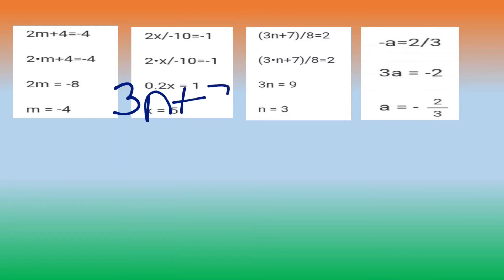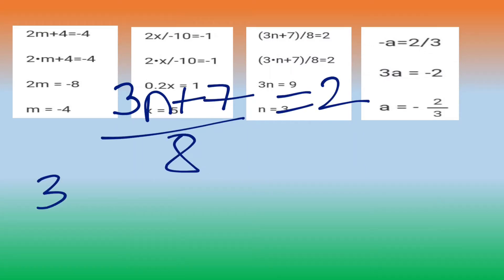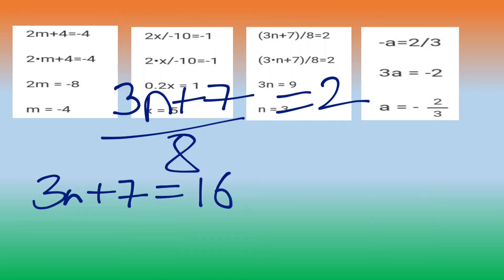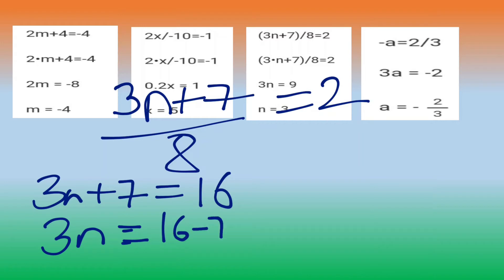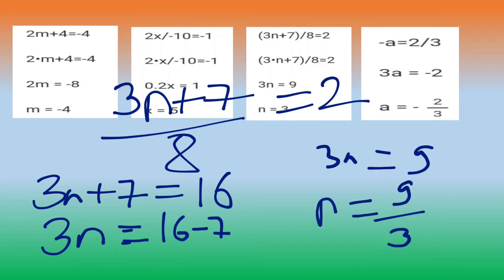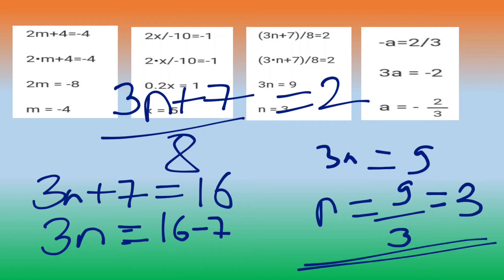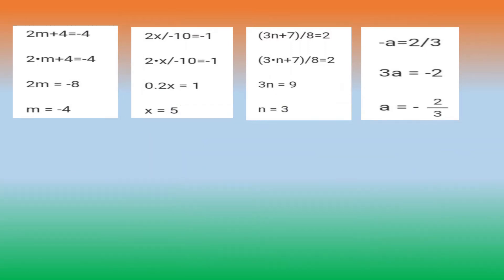Now we will solve question number 9: (3n plus 7) by 8 equals to 2. So 3n plus 7 as it is, and 8 multiplied by 2 means 16. Now we will transfer minus 7 to the RHS so we get 16 minus 7. So 3n equals to 9, n equals to 9 by 3, we will get n equals to 3. You have to solve other questions in the same manner.